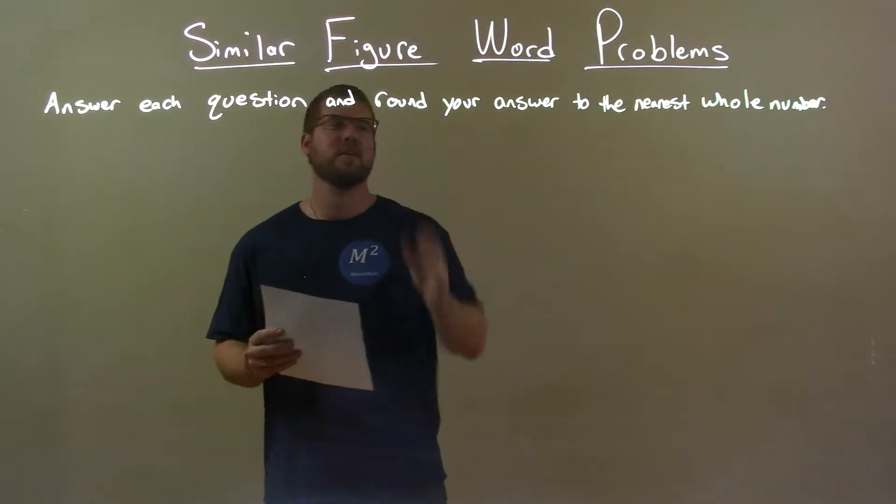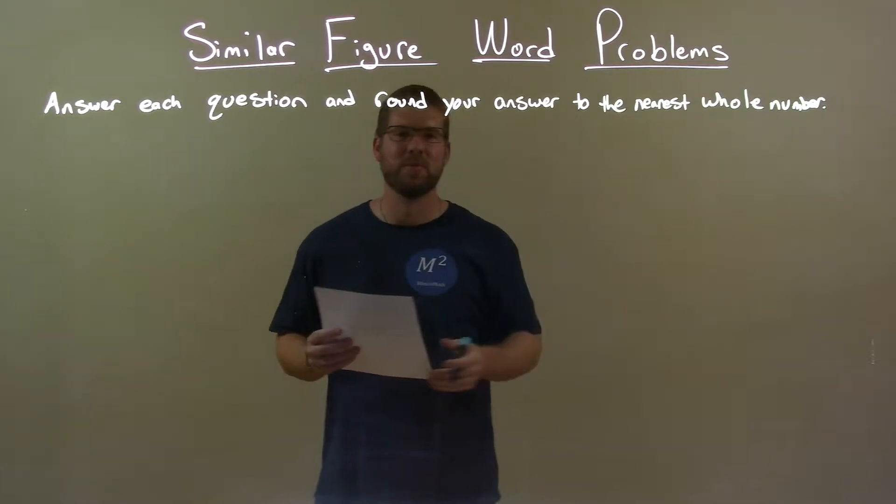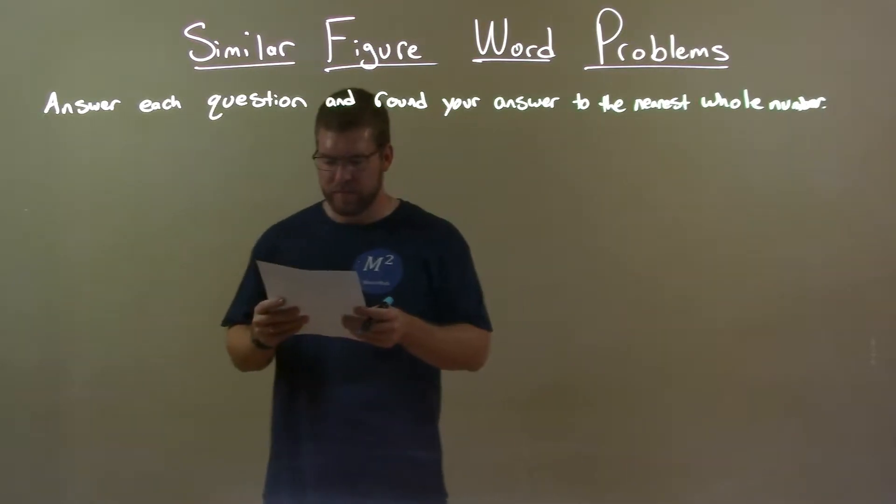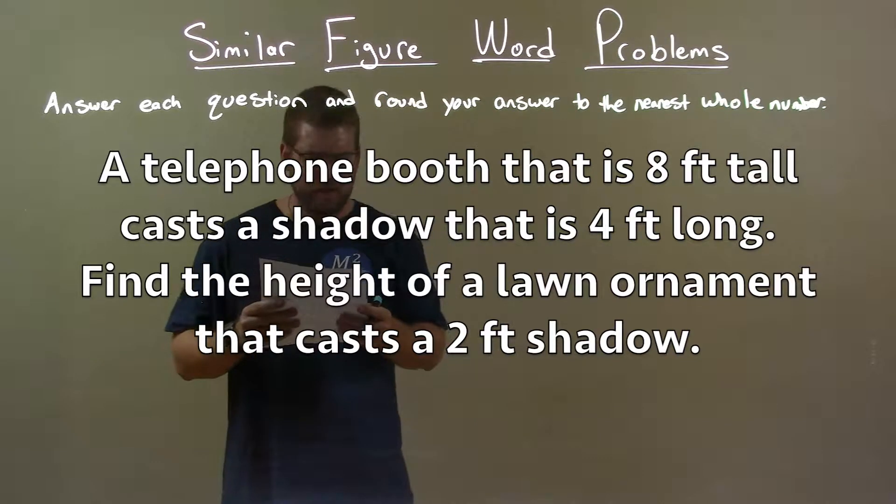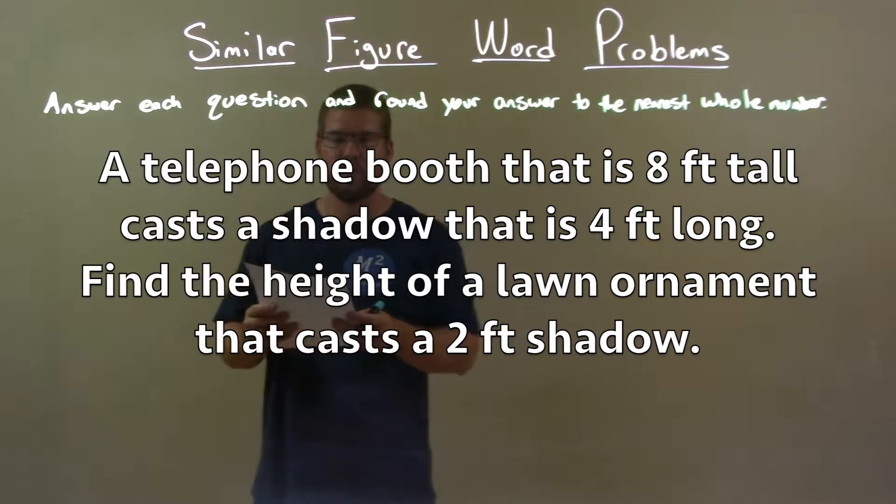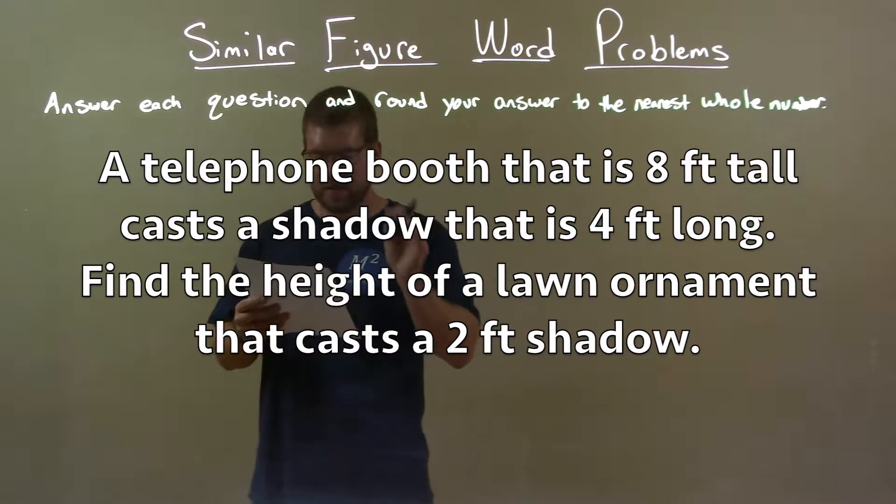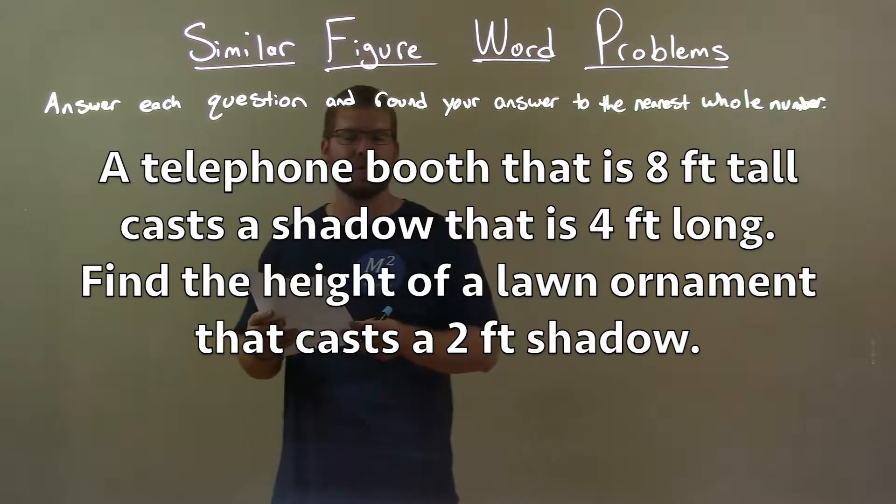Answer each question and round your answer to the nearest whole number. A telephone booth that is 8 feet tall casts a shadow that is 4 feet long. Find the height of the lawn ornament that casts a 2 foot shadow.